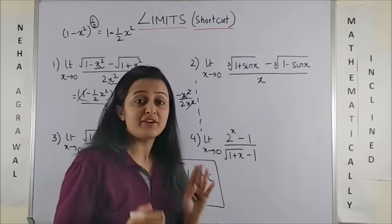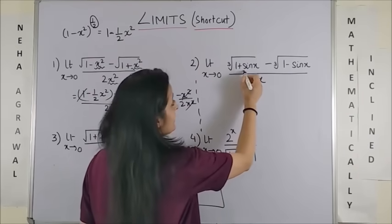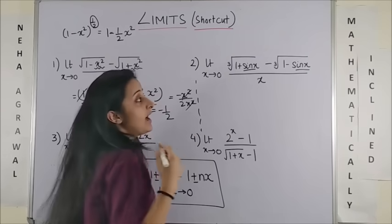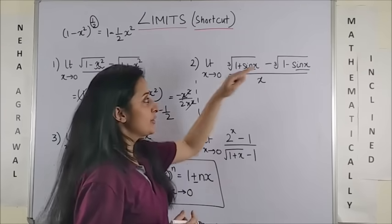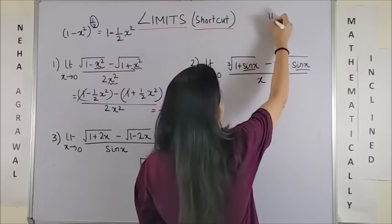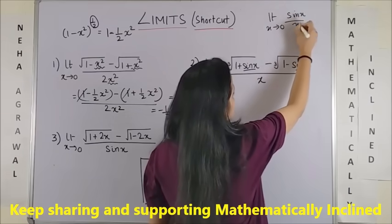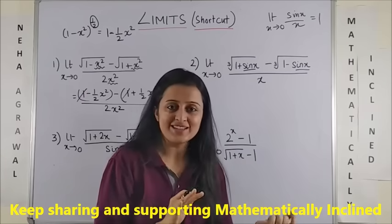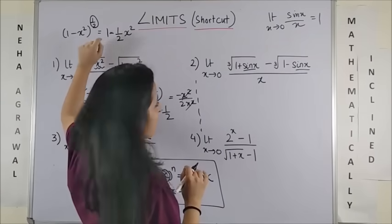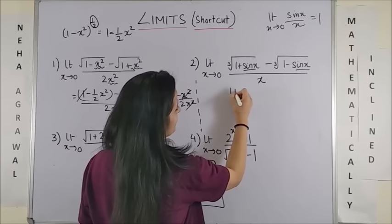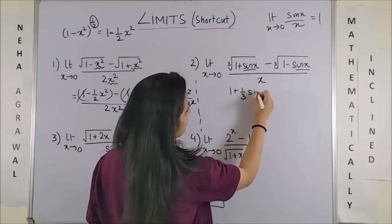Now, moving to the second one. Likewise, I see sin x over here. I can still solve the question because we also have this thing in our mind that limit x tending to 0, sin x by x is 1. So we can use this somewhere. First of all, applying the secret magic, we get 1 plus 1 by 3 sin x.